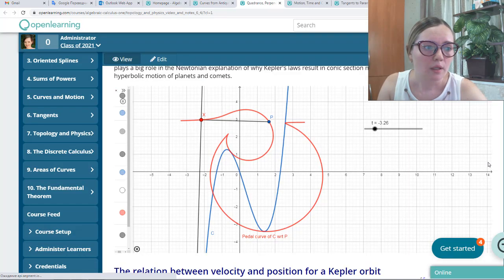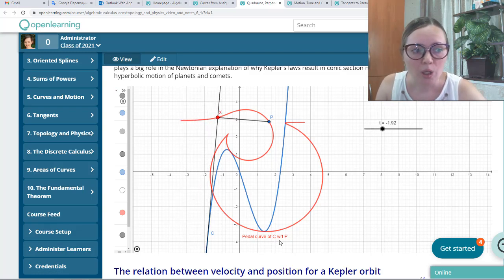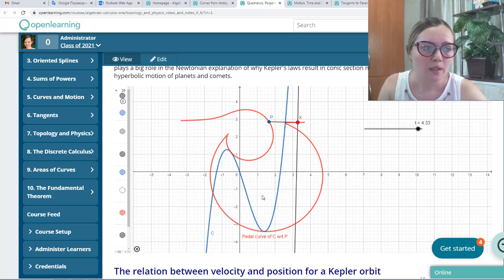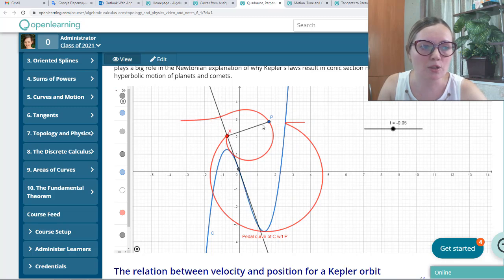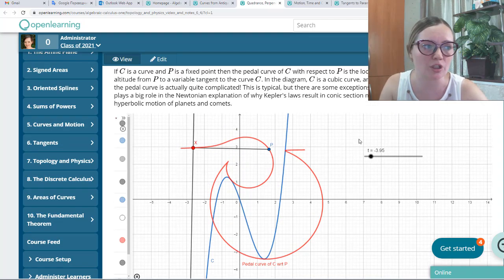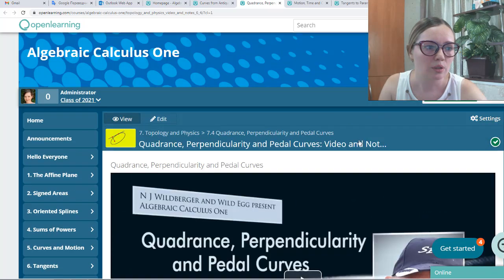There will be more complicated animations like construction of a pedal curve, which is quite hard to see without such construction. You see the blue curve is fixed and the point is fixed, point P. With respect to this curve and this point, we construct a new curve, a red one, which is called the pedal curve. You will see the definition in this chapter, chapter 7.